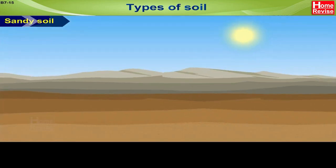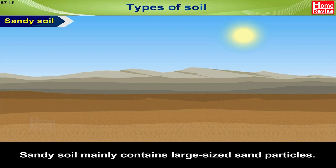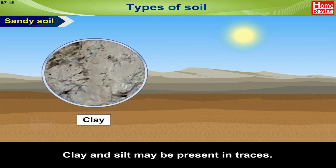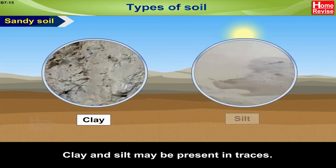Types of Soil. Sandy Soil: Sandy soil mainly contains large-sized sand particles. Clay and silt may be present in traces.